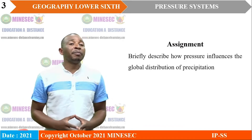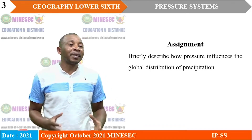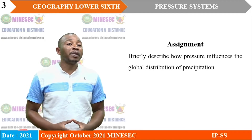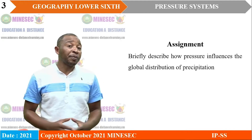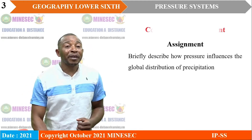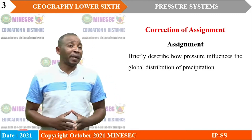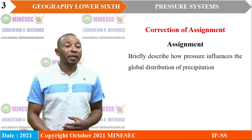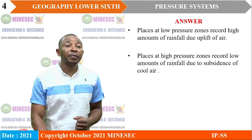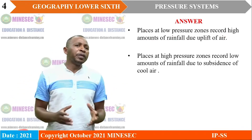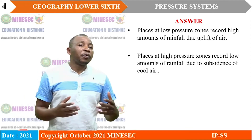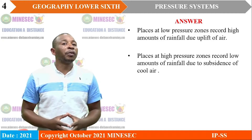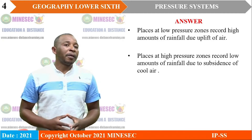Before we begin with the lesson, let us start by correcting the assignment. The assignment was to briefly describe how pressure influences the global distribution of precipitation. Generally, we know that places located at low pressure zones record high amounts of rainfall due to uplift of air.